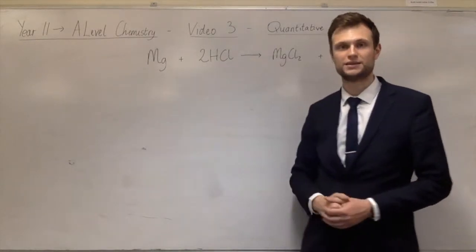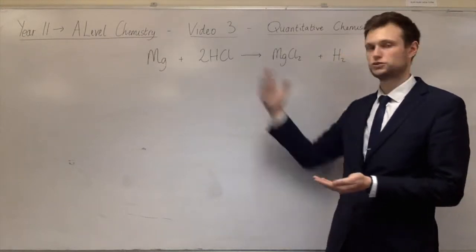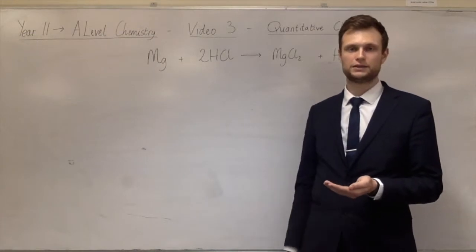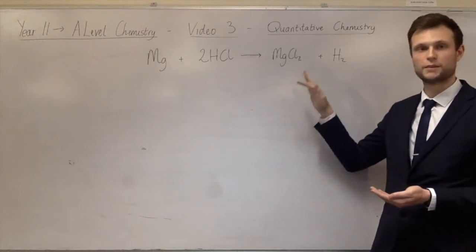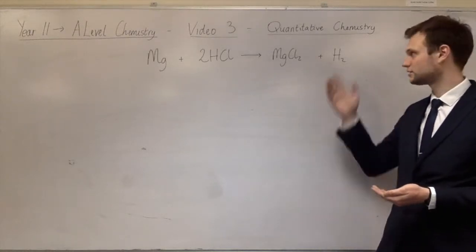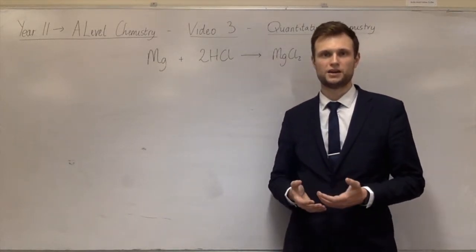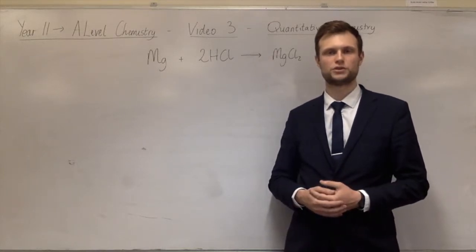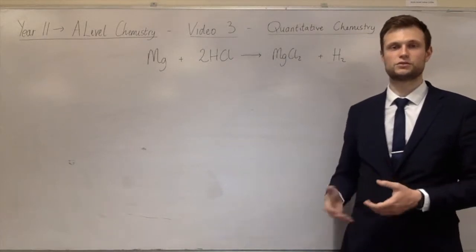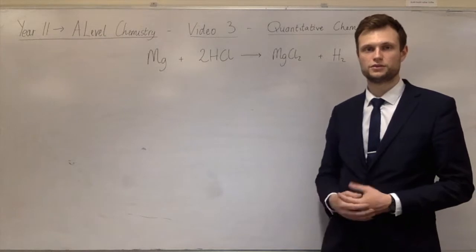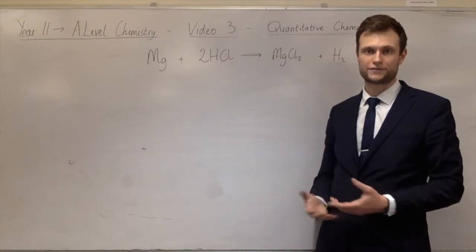Once you know that ratio you can do a lot. For example, if you had one billion magnesium atoms you could work out that you'd need two billion hydrogen chloride molecules to react completely, producing one billion magnesium chloride units and one billion hydrogen molecules. The problem is you have no way of counting atoms, so we relate numbers of atoms to something we can measure — mass — the mass of magnesium or the mass of hydrogen chloride.